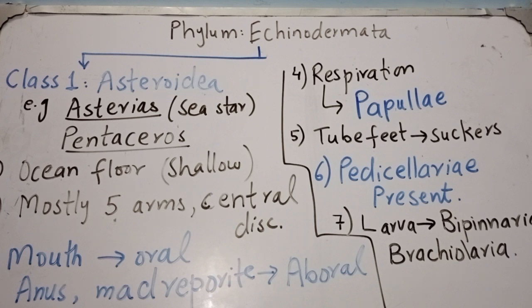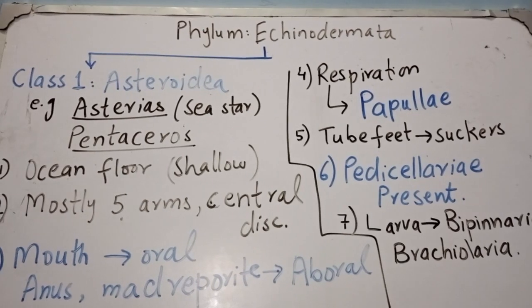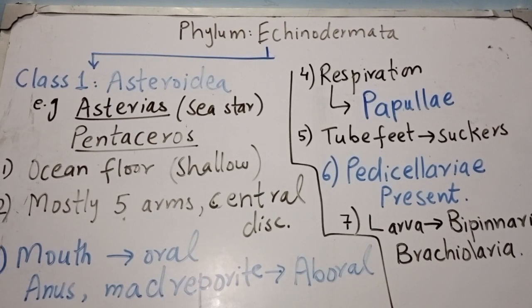The first class is Asteroidea. 'Aster' means star and '-idea' means like, so this refers to a star-like body. This class includes Asterias, commonly known as sea star or starfish. Members of Asteroidea have a star-like body, are found on the ocean floor in shallow water, and have mostly five arms arising from a central disk, with no clear distinction between the arms and the central disk.